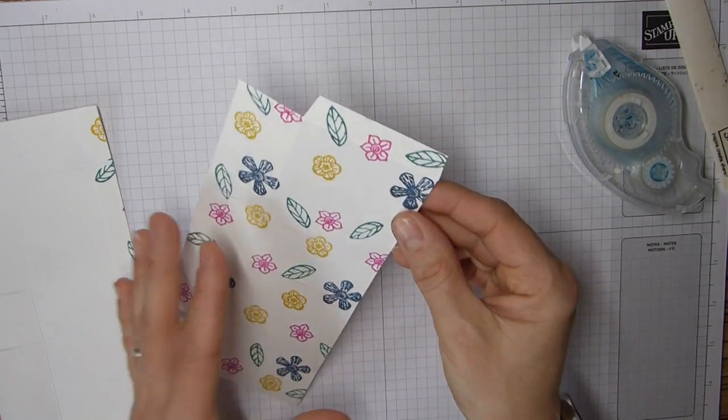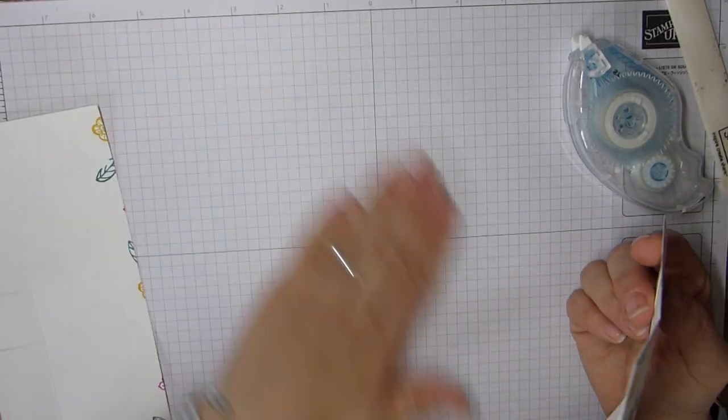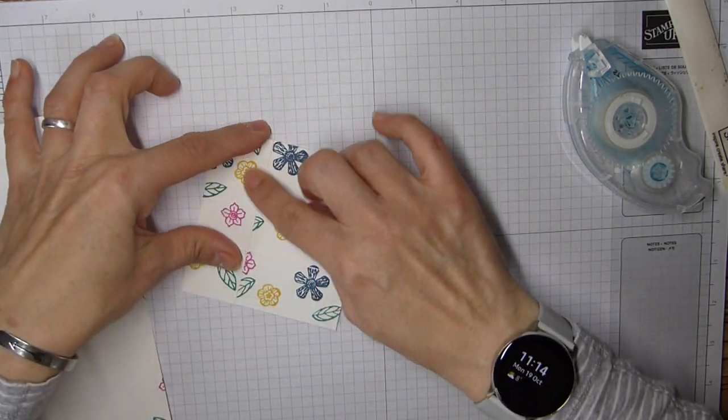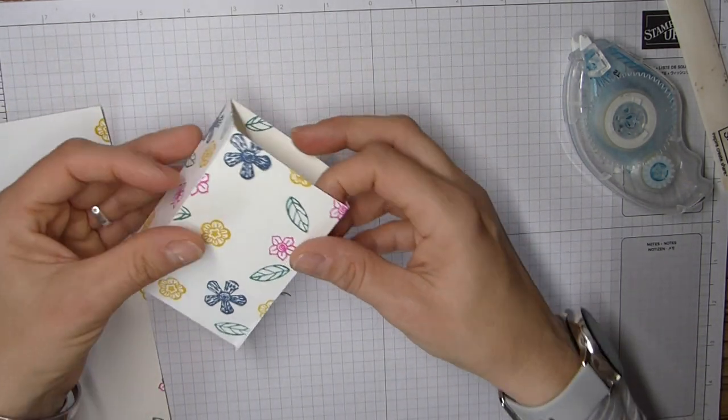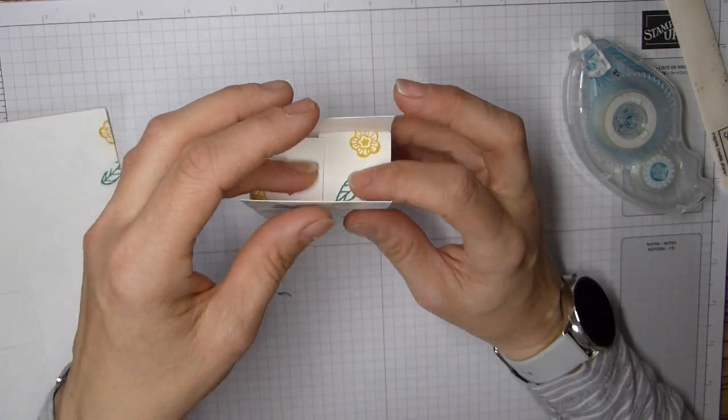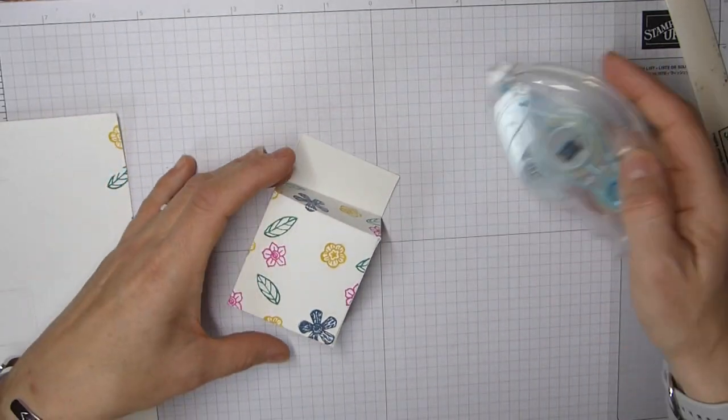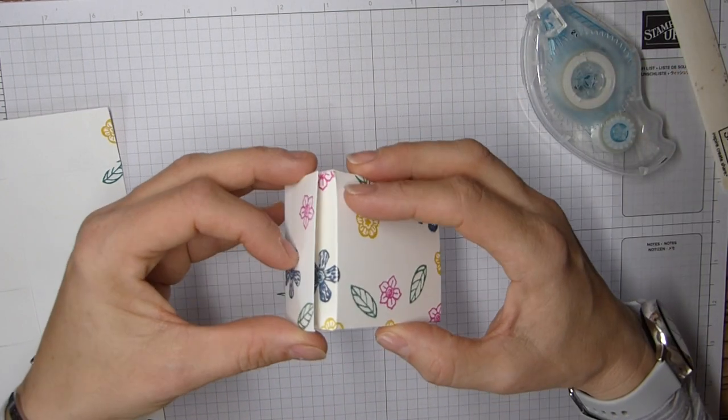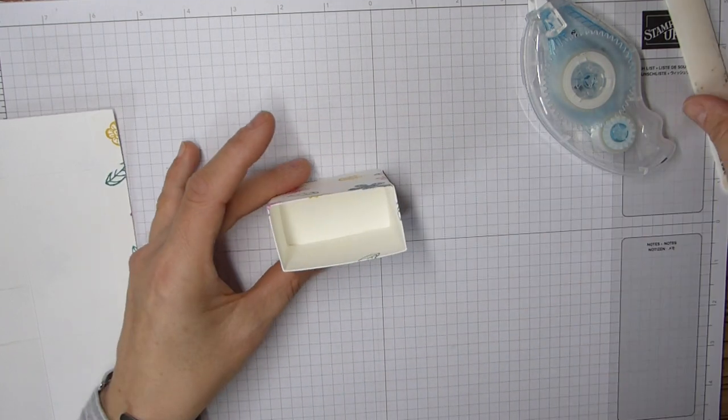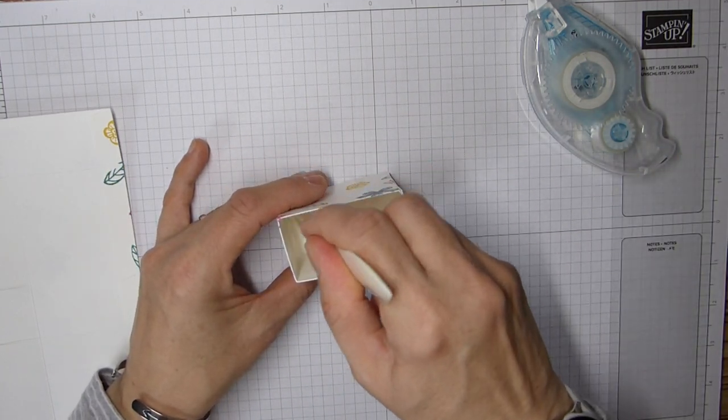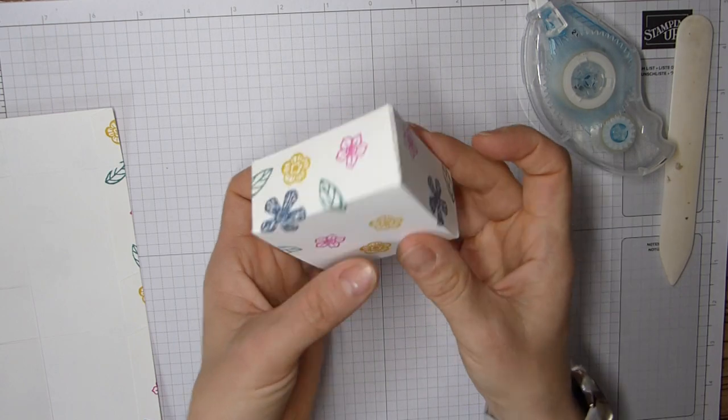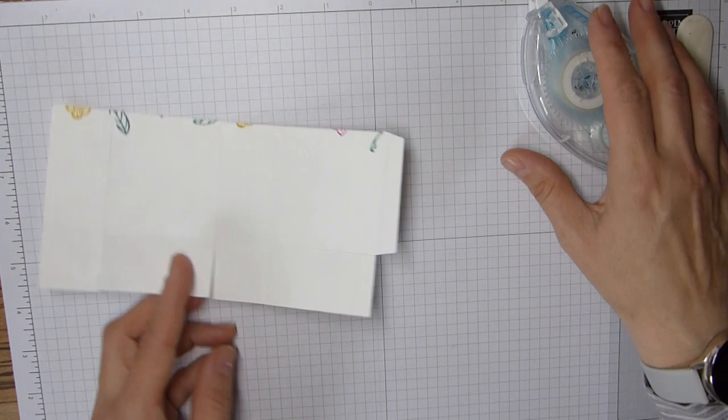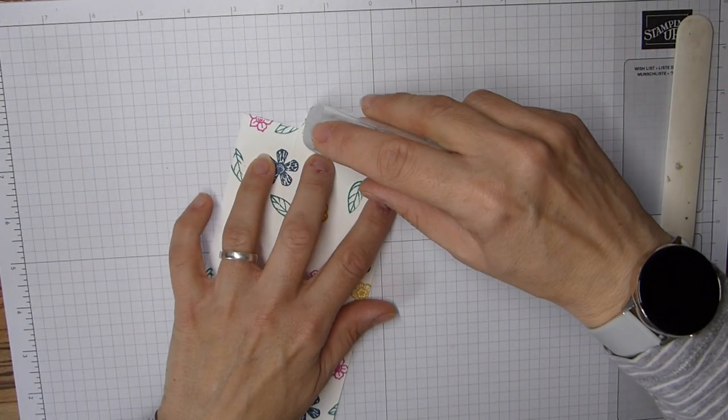Then we can just fold these over and line those up, and then we just fold the tops in. Then obviously just add some adhesive on here to create the top. Again if you want to just pop it down on the desk and press it inside you can do, but there is your bottom or your lid.